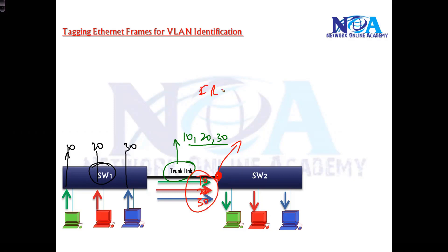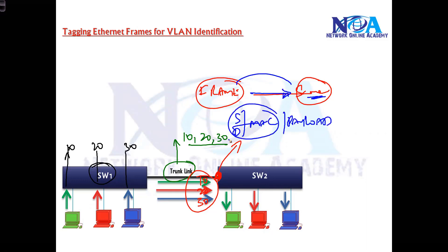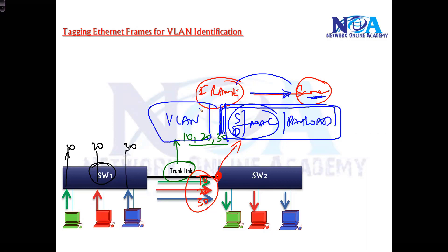The format of the Ethernet frame remains the same for all. If you remember, we discussed Ethernet frame formats in the basics — it contains source and destination MAC addresses along with the actual payload. There is no information about which VLAN the frame actually belongs to. So how will Switch 2 differentiate the traffic of every VLAN when they travel on the same link?